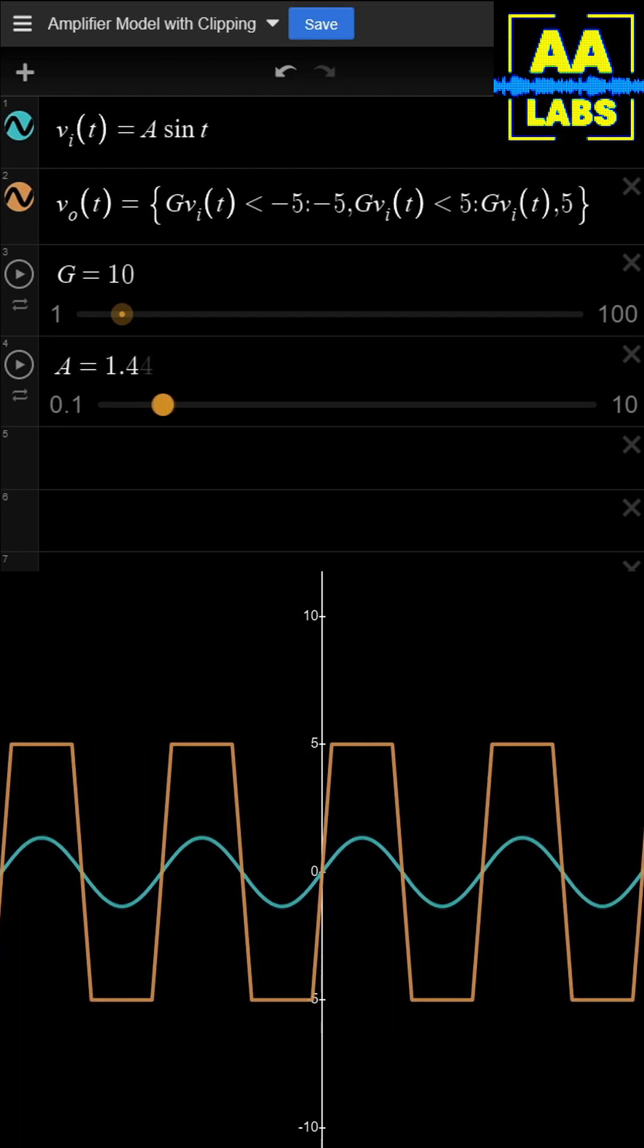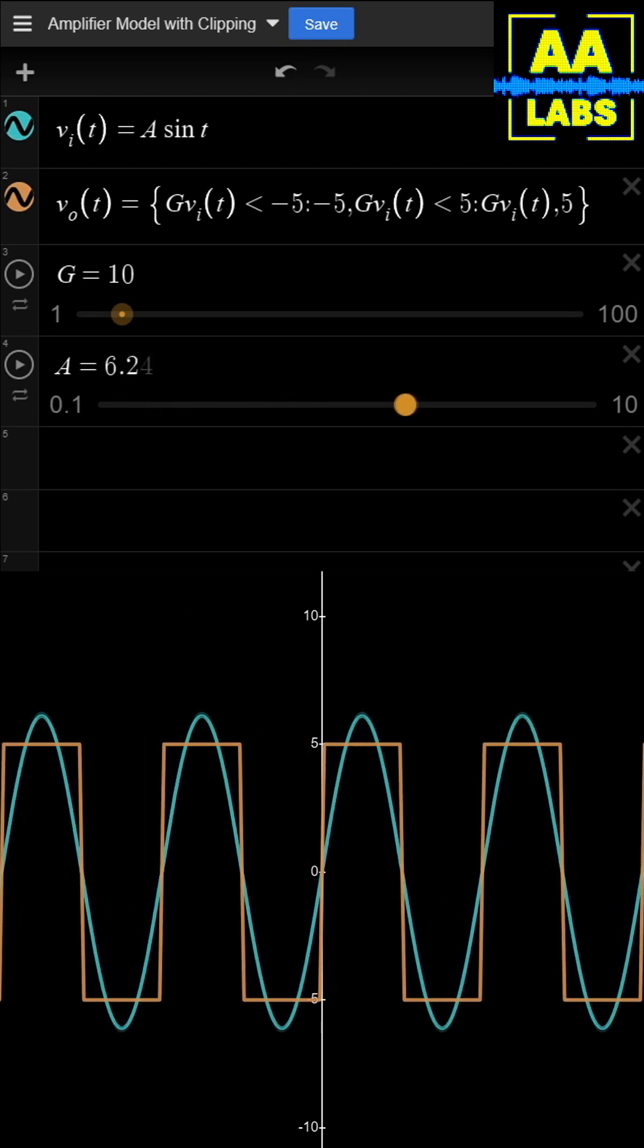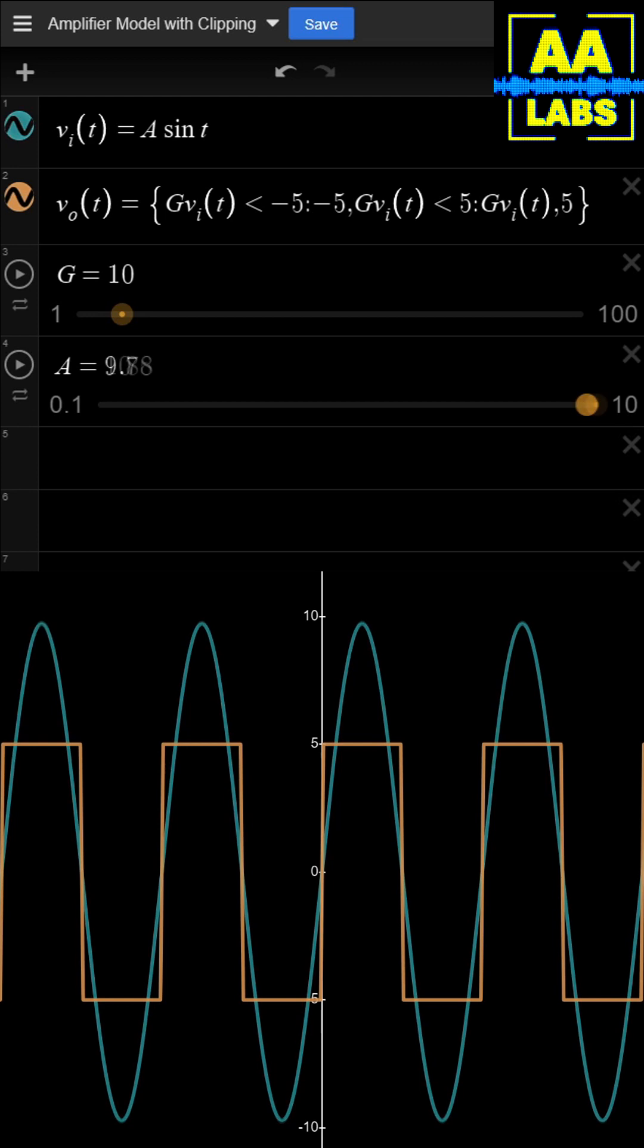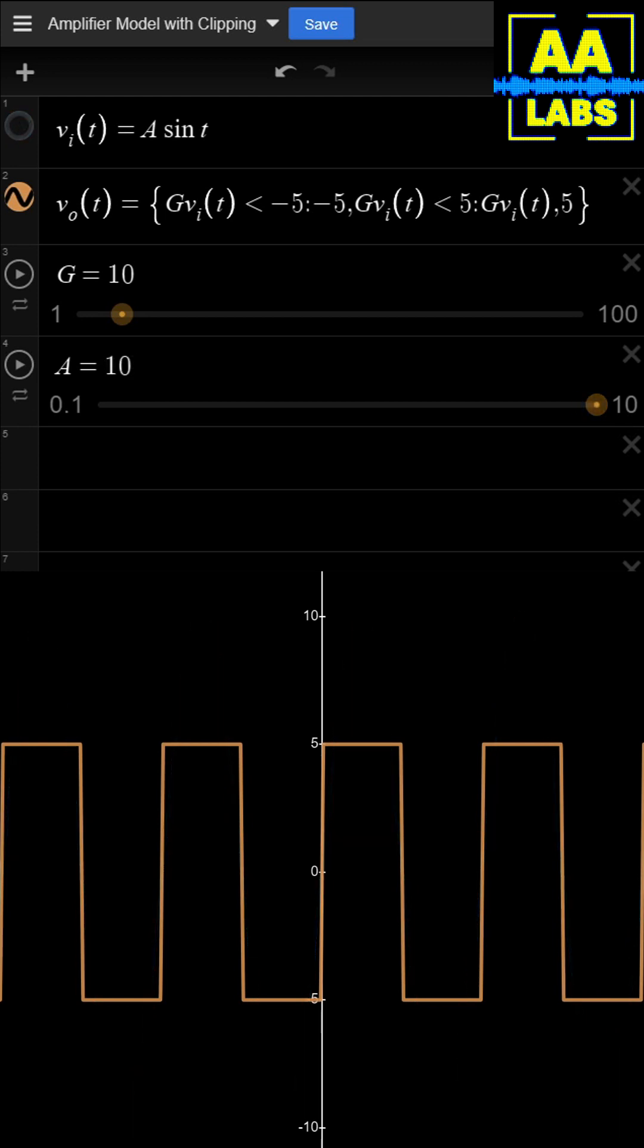If we increase the amplitude of the input sine wave, the output basically becomes a square wave. So visually on the waveform, clipping occurs. But what does this mean in the frequency domain?